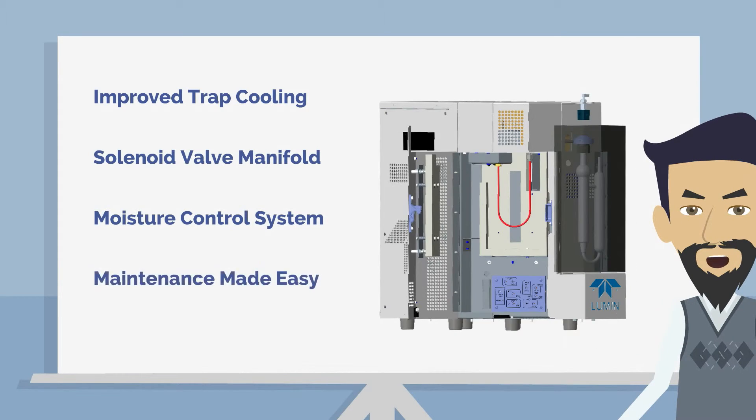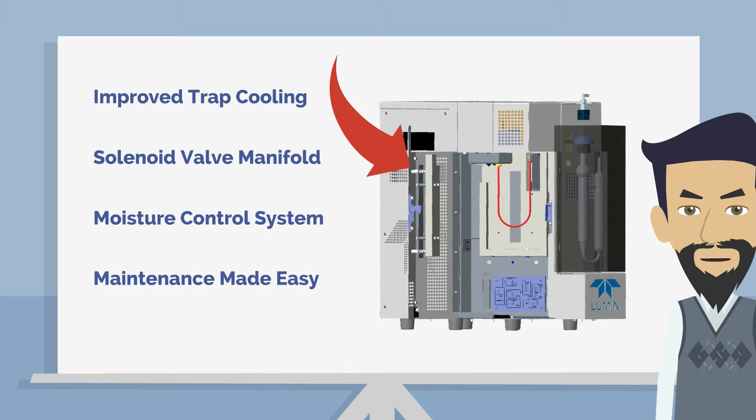The Lumen is also designed to shorten maintenance tasks that labs perform most often. Full access to the analytical trap and solenoid valve manifold are as simple as opening a door. Thanks to our clever trap compartment, both analytical trap nuts can be easily accessed. This makes for quick, easy trap changes, reducing downtime.